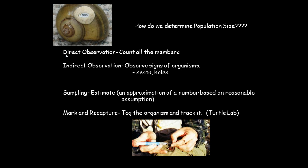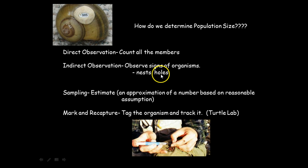Another method we use is called indirect observation. When we use indirect observation, we're basically looking for signs that the organism has been found there — things such as nests or holes. You can figure out how many organisms could fit into the nest, or how big the hole is and how many organisms could be found there. You can come up with different ways to discover whether the organism would be able to live there and how many would be present.